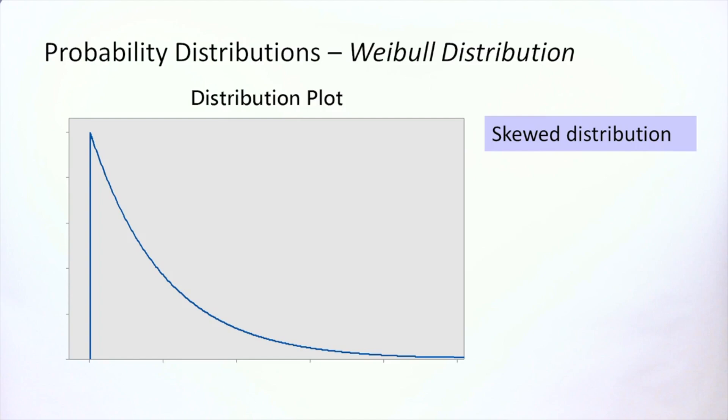The Weibull distribution is often used for data like throughput times and processing times because these are often skewed variables. Many values are relatively small and some values are very high.